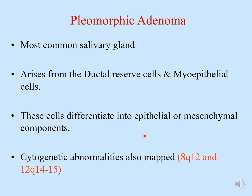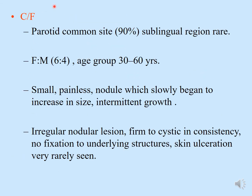A cytogenetic abnormality has been identified in pleomorphic adenoma, mapped to 8q12 and 12q14 and 15. These two genetic mutations are commonly seen in pleomorphic adenoma patients, and the tumor has also been associated with radiation exposure. Clinically, it commonly affects the parotid (90%), the rarest area being sublingual. The female-to-male ratio is 6:4, and the most commonly affected age group is 30 to 60 years.